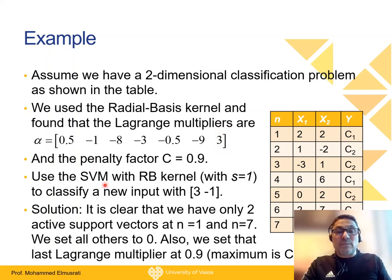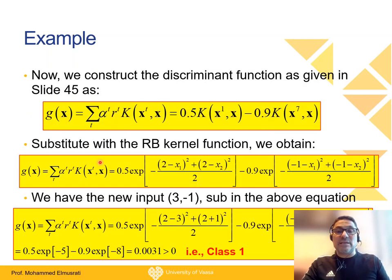The support vector machine has this radial basis kernel with variance s equal to 1. Now we build the discriminant function as you can see here. It is calculated as the summation of α_t × r_t × K(x_t, x).